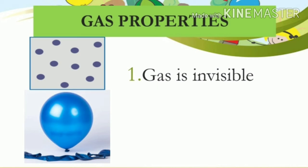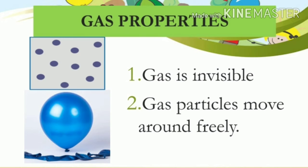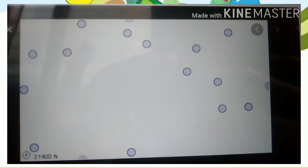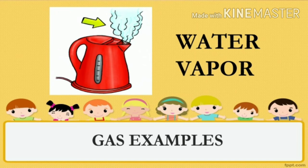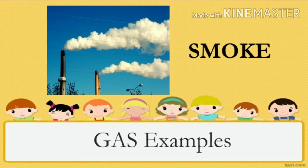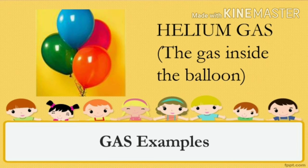Gas properties: gas is invisible — not all gases are invisible, but most of them are. Gas particles move around freely, even more so than the particles of a liquid. Comparing gas particles to liquid particles, gas particles have more space to move. Examples of gas are water vapor, smoke, oxygen, helium gas inside a balloon, and more.